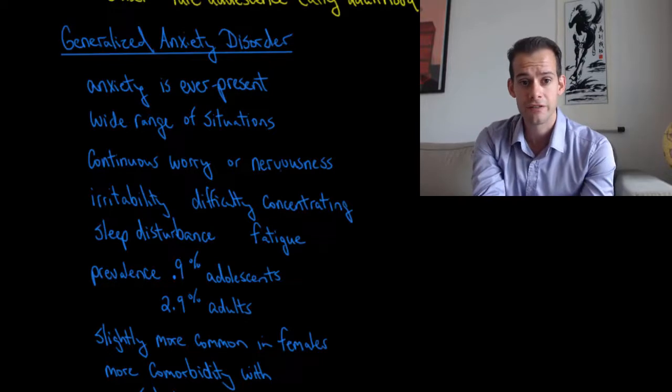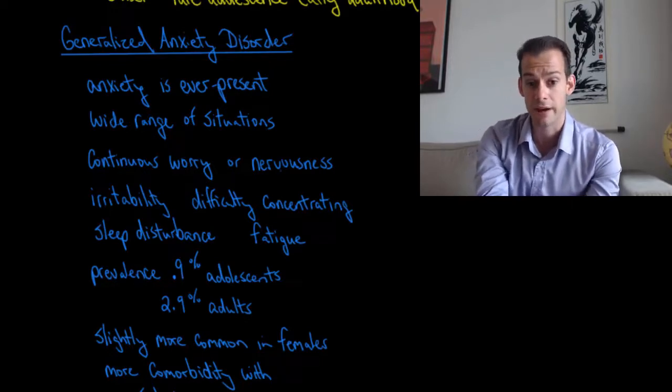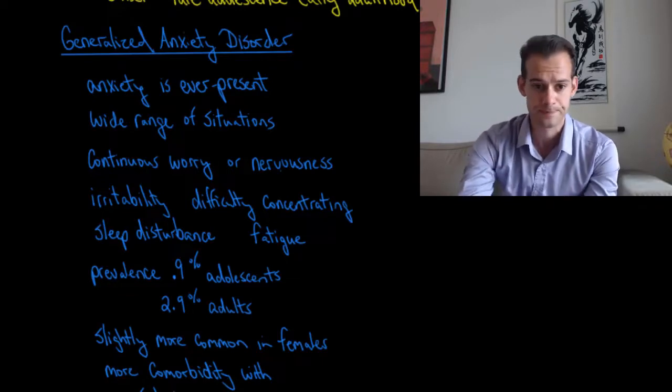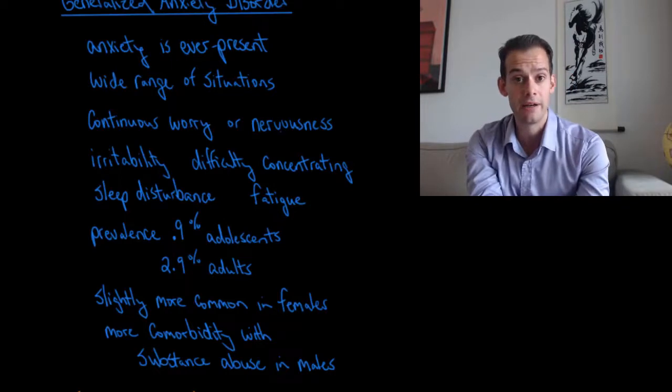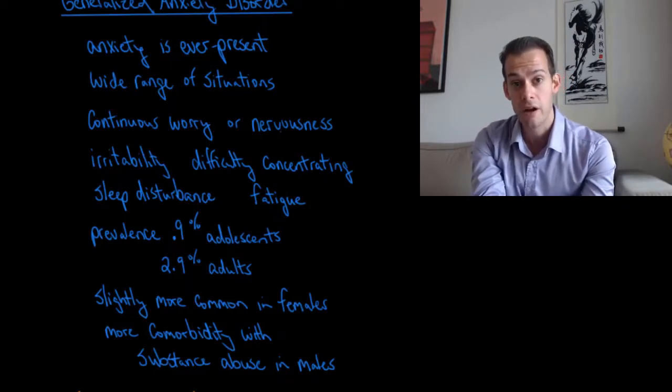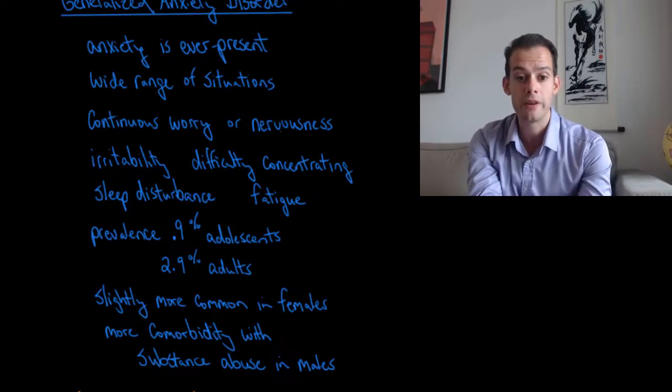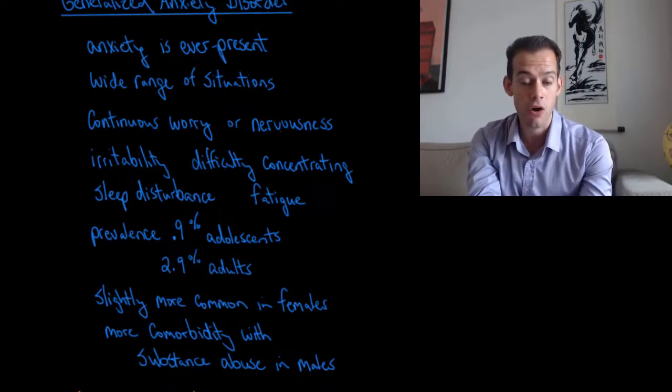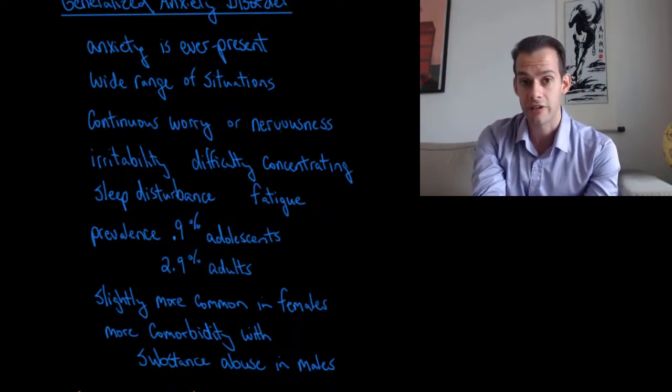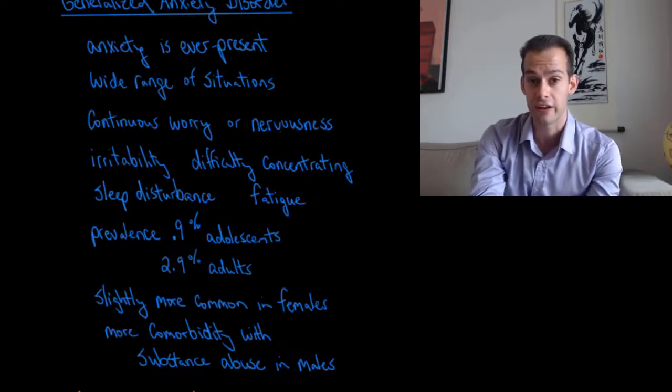Now the prevalence of generalized anxiety disorder is about 0.9 percent in adolescents and it's a bit higher in adults about 2.9 percent. And generalized anxiety disorder is slightly more common in females than males but not much. But in males it's more likely to be comorbid with a substance abuse problem. So as we saw people might be self-medicating using something like alcohol in an attempt to reduce their feelings of anxiety and it seems that males are more likely to do that in females in the case of generalized anxiety disorder.